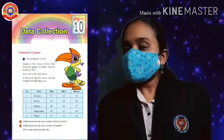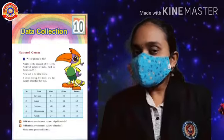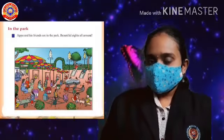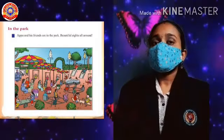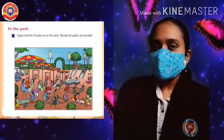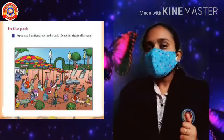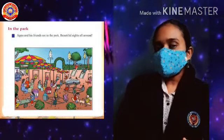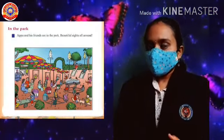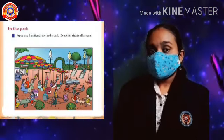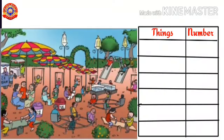Today's first activity is in the park. Appu and his friends are in the park. Beautiful sights all around. What all things do you see in the picture? How many of each? Fill in this table. Then let's find the number of things Appu and his friends saw in the park.